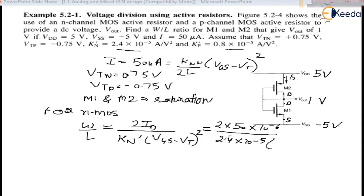This V_GS, now V_GS in case of NMOS, we know V_GS is 1 minus (-5), minus 5 will give us 6 volt. So we can write 6 minus V_T is 0.75 whole square. And W/L ratio came out to be 0.15.